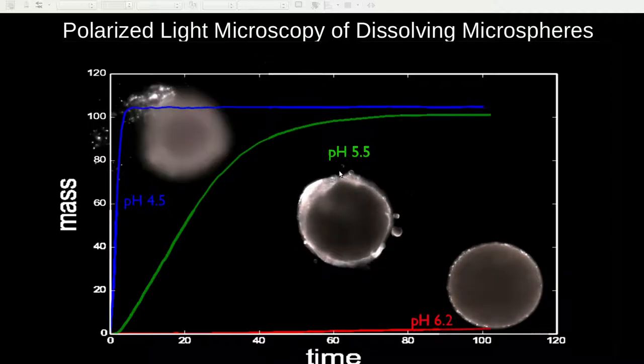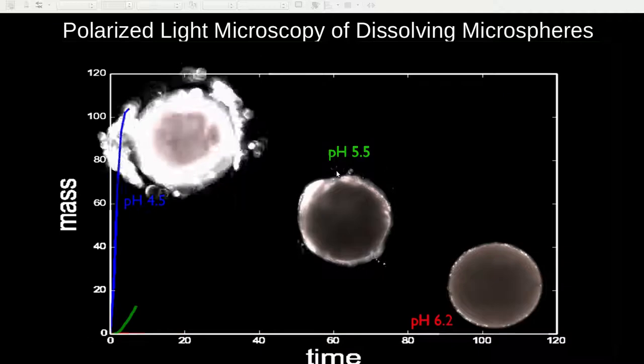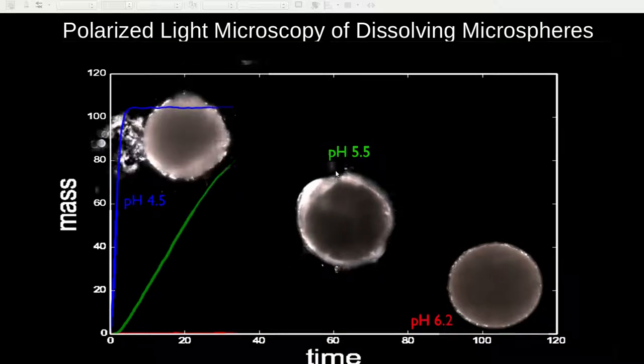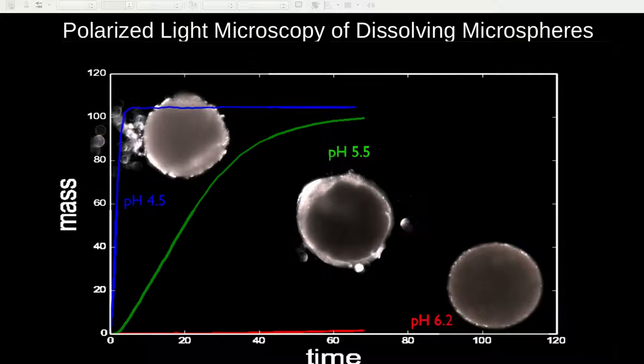Therefore, by just measuring the polymer dissolution should give some approximate idea of how fast the API will be released in the microsphere formulation.